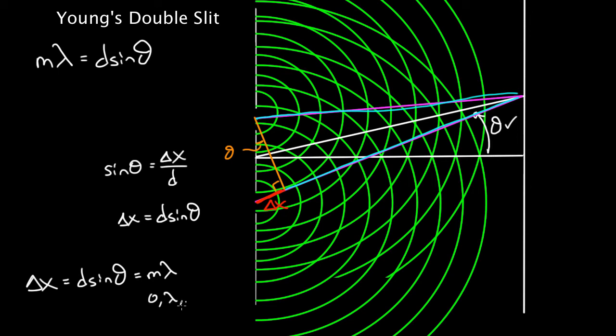So zero, one wavelength, two wavelength, and so on. And so in order to get constructive points, d sine theta, which is the path length difference, has to equal zero, lambda, two lambda. And this is the double slit formula. It looks like this. What does it give you?